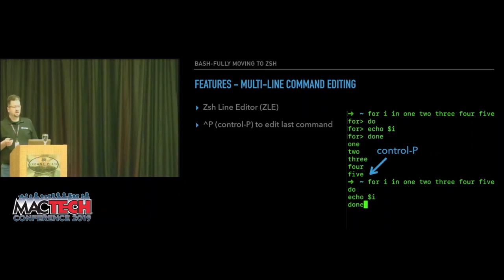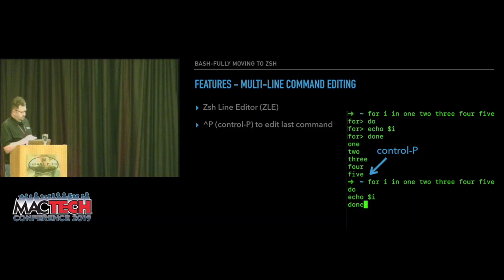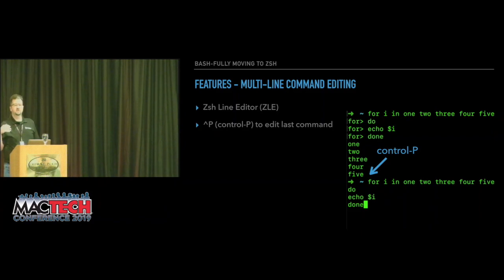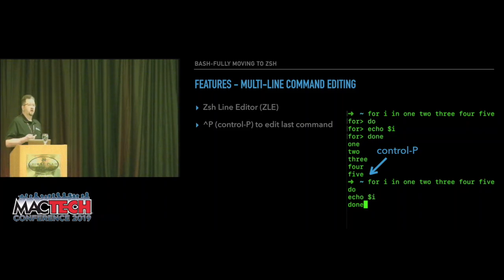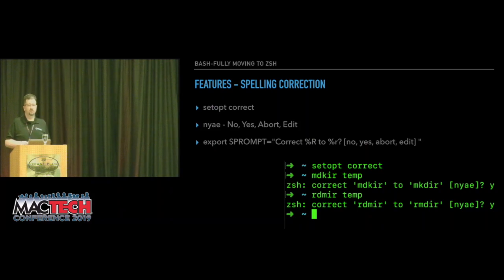Multi-line command editing is really cool with the ZLE — the ZSH Line Editor. As you're working on a line, once you've run it, you can type Ctrl-P and it'll give you all the code you just typed back in a multi-line format. You can use arrow keys to get back through there, adjust your code, and run it again. In bash you get a single line which scrolled to the end, and it wasn't easy to edit.